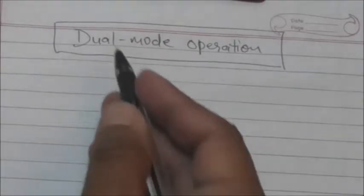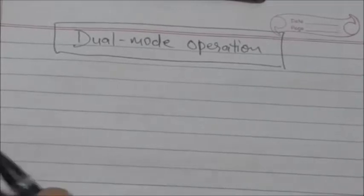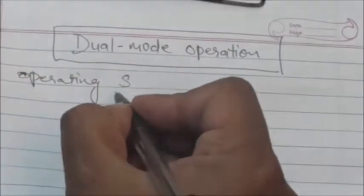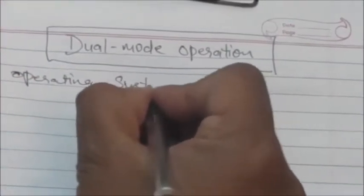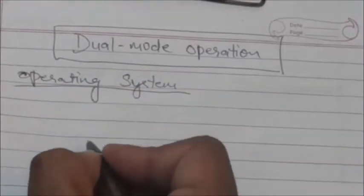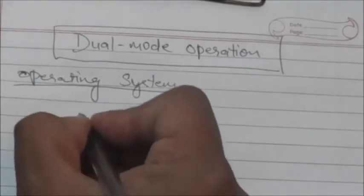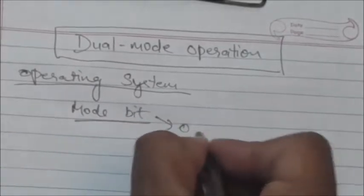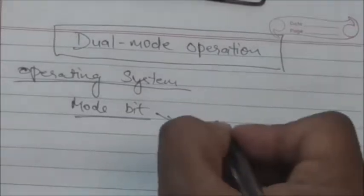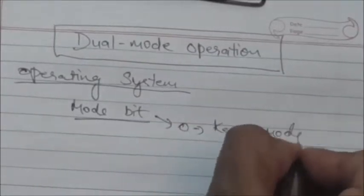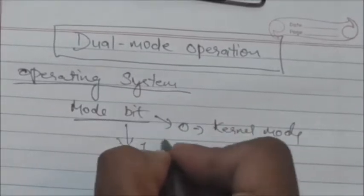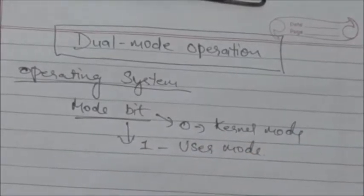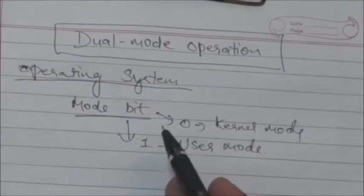In this tutorial we will study about dual mode operation. To ensure proper execution of the operating system, there must be a way to distinguish between user code and operating system code. For this purpose, one bit is maintained in hardware called the mode bit. When the mode bit is 0, the system is said to be in kernel mode, and when the mode bit is 1, the system is said to be in user mode.